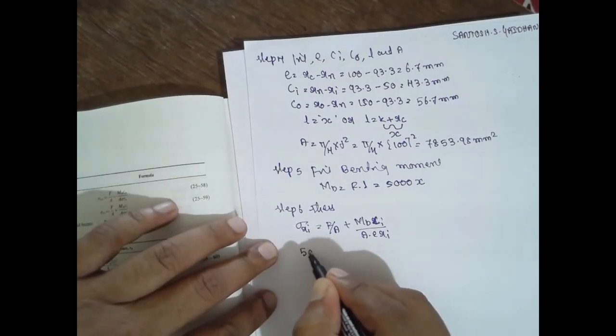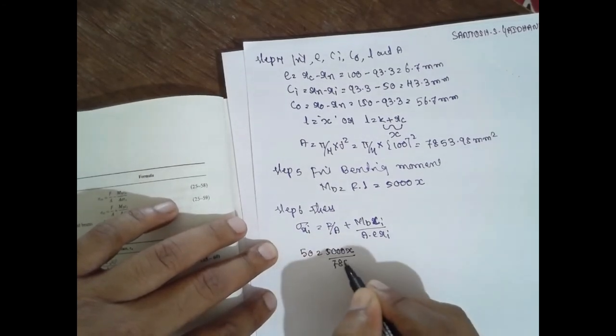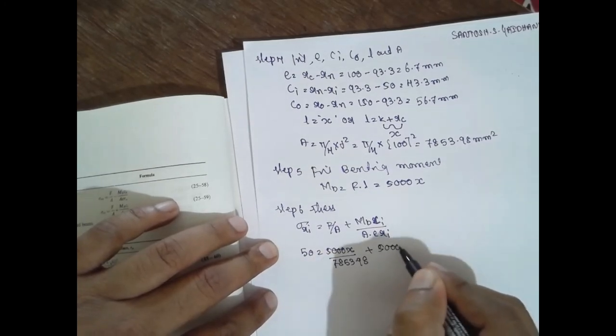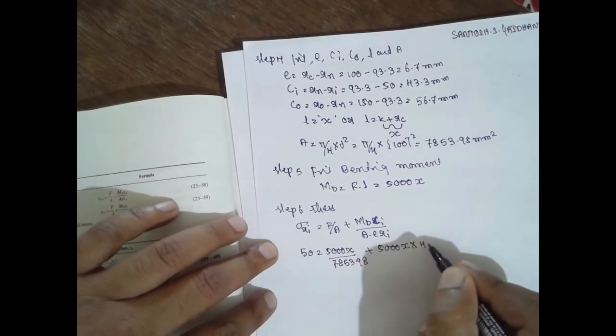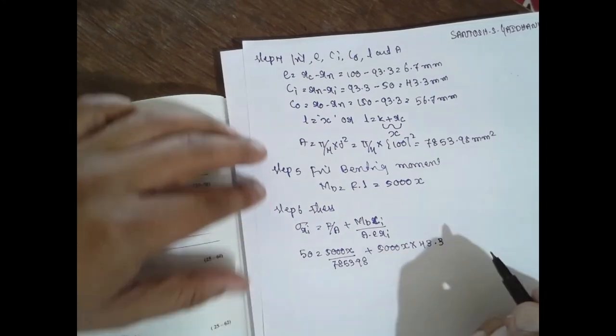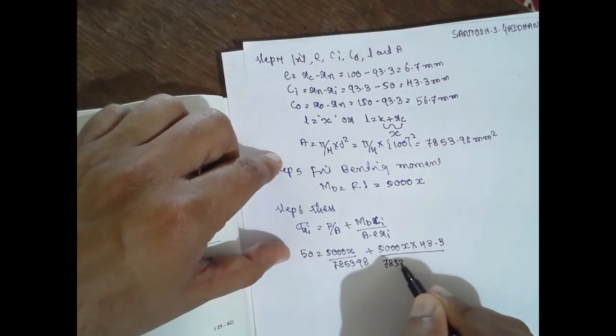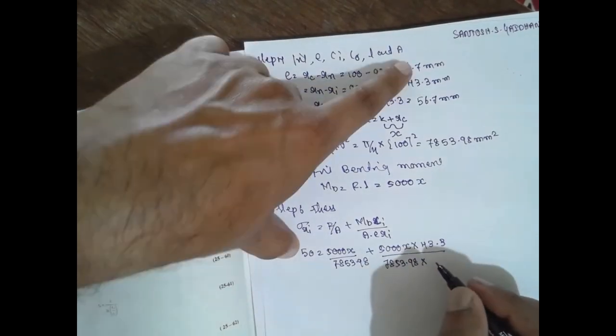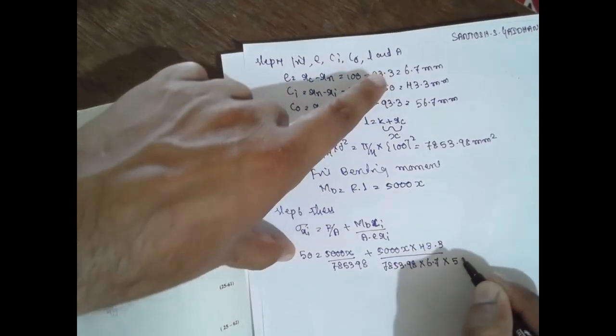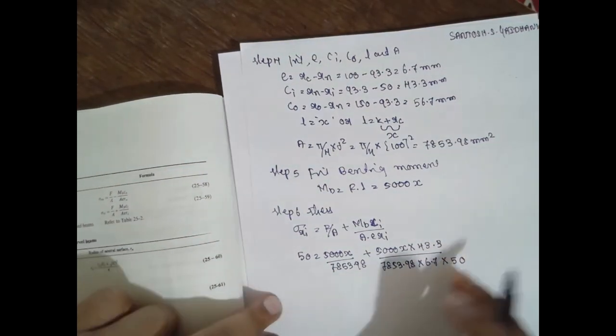This value is already given in the question: that is 50 N/mm². What is f? 5000x, area 7853.98, plus 5000x into 43.3, ci value, divided by area 7853.98 into 6.7 into 50. And ri is nothing but 50, obtained from the diagram.